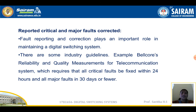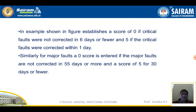Reported critical and major fault correction plays an important role in maintaining a DSS. Industry guidelines such as Bellcore's reliability and quality measurements for telecommunication systems require all critical faults to be fixed within 24 hours and all major faults within 30 days. In the example shown, a score of 0 is given if critical faults are not corrected within 6 days, and a score of 5 if corrected within 1 day. For major faults, a score of 0 is entered if not corrected in 55 days or more, and a score of 5 for correction within 30 days.